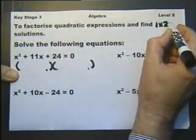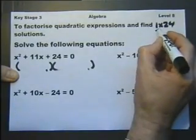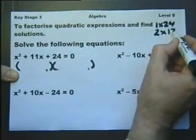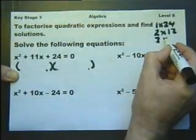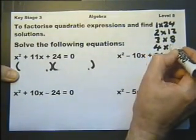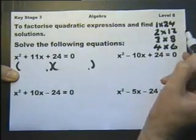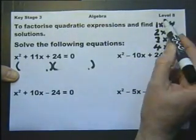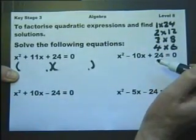So that's 1 times 24 will do the job. Or 2 times 12. Or 3 times 8. Or 4 times 6. Now in the exam, there's absolutely nothing to stop you writing that sort of thing down to help you do the question. You don't have to do it in your head.